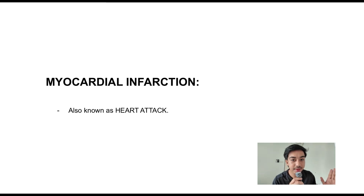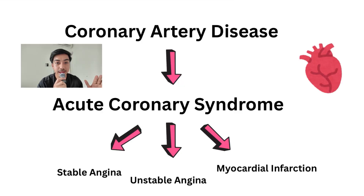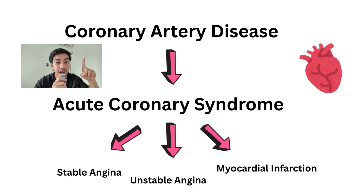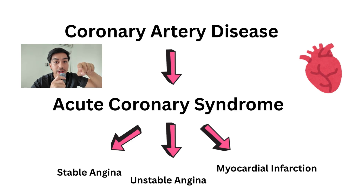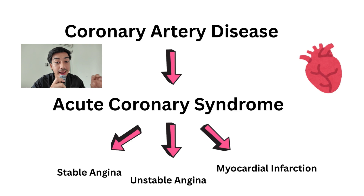To understand it better, take a look at this. Coronary artery disease is like the mother, the umbrella. What causes coronary artery disease? Fats — we'll discuss that later. So coronary artery disease is the main one, and under it we have acute coronary syndrome. And under ACS, or acute coronary syndrome, we have three complications.